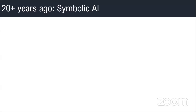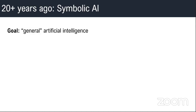Let's get started with history. There used to be something called symbolic AI. The goal of those AI systems — this is more than 20 years ago — was to build general artificial intelligence. Achieving this general intelligence is a really tall goal, which means one system that could solve any problem.